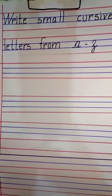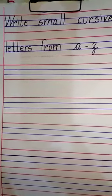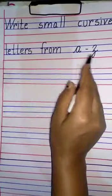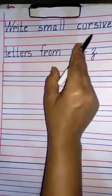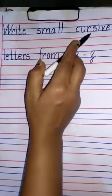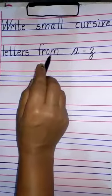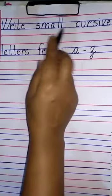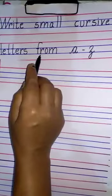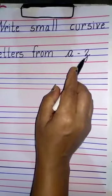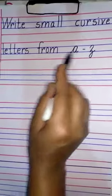In this video, today we are going to learn how to write small cursive A to small cursive Z. As on the top you can see the heading written: write small cursive letters from A to Z. So let's start now.